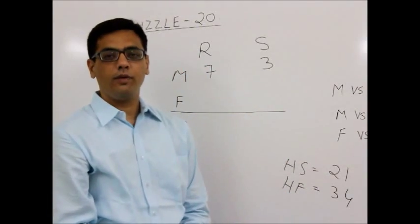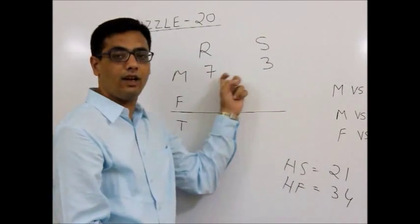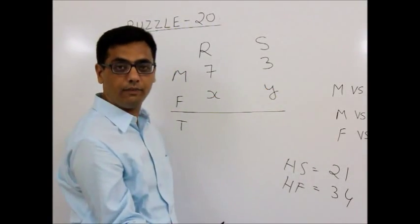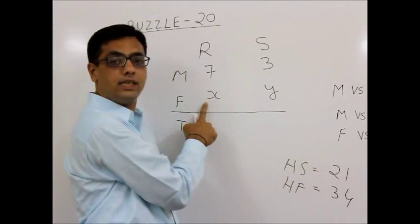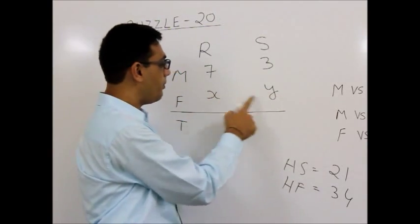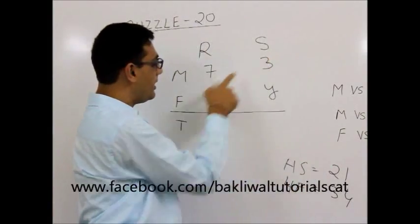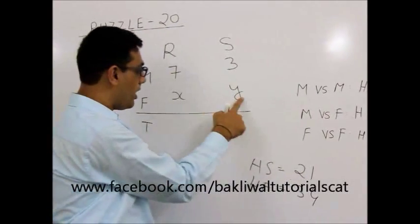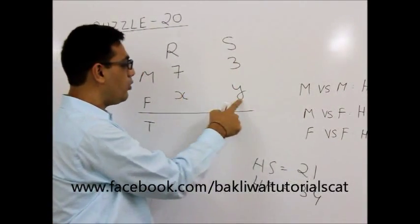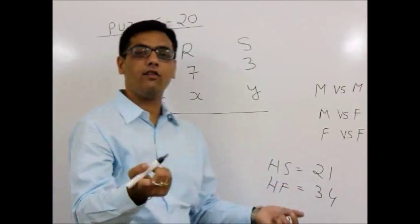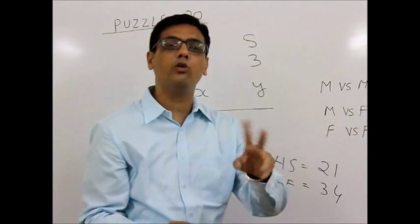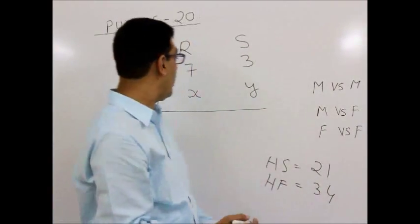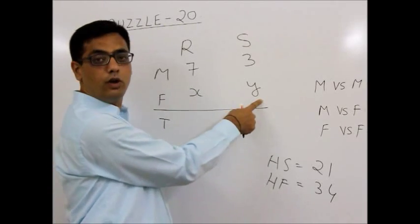So what most of my students in my campus do is that they of course come till here and then they assume x and y. And then they make an equation 7y plus 3x plus x into y. Because hand-fold is between male-female which is this combination plus female-female which is xy. So they make an equation 7y plus 3x plus xy is equal to 34. And since x and y are positive integers, we can do some small number crunching. Because it's a small number and we can get the answer as x is equal to 4 and y is equal to 2.